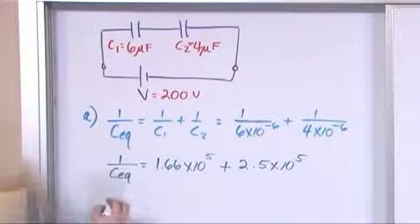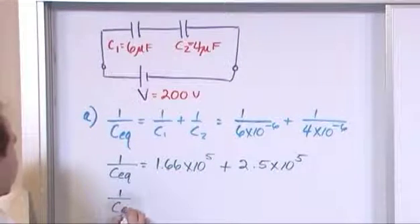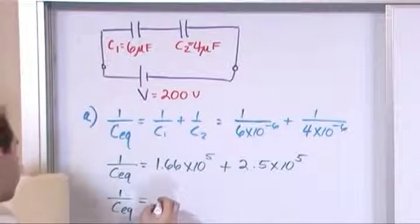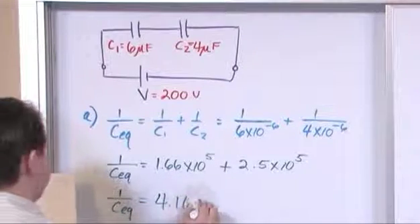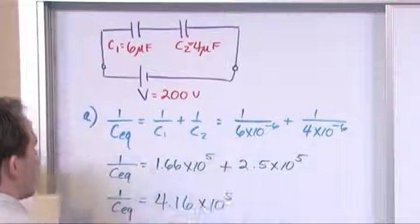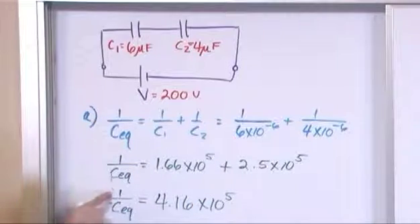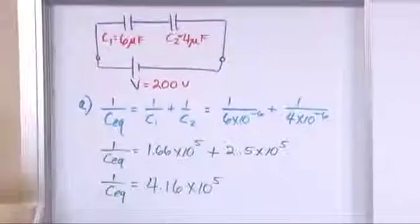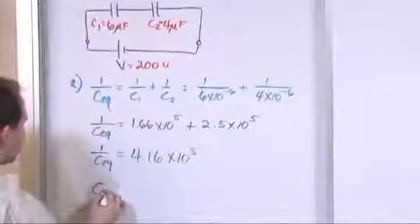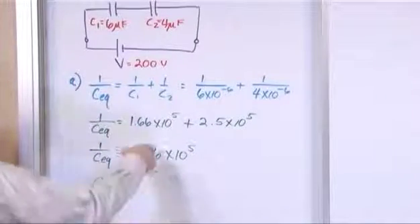So we can add these two guys together, so 1 over equivalent capacitor, when we add them together, we'll get 4.16×10^5. Now that's not the answer, because that's equal to 1 over the equivalent capacitance. In order to find the equivalent capacitance, we take this number and say 1 divided by this number.